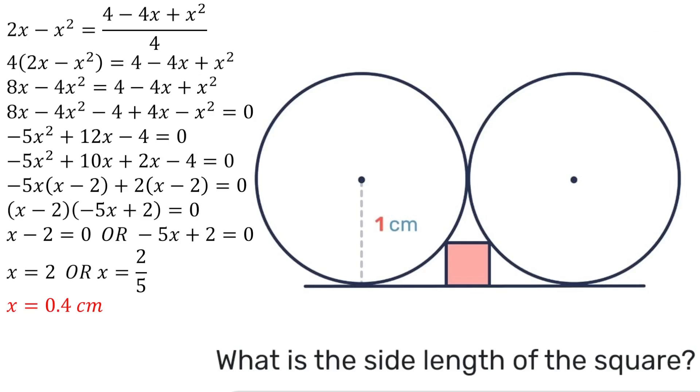In general if you notice since our circles were of unit length anytime you have two circles that are tangent to each other like this and you have a small square touching both of them at the bottom like that then that little square its side length will always be two fifths of the radius of those circles.